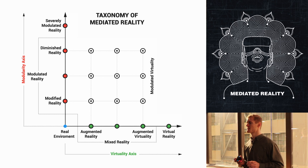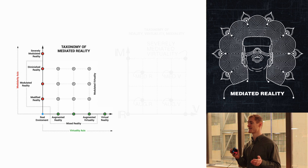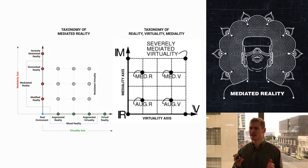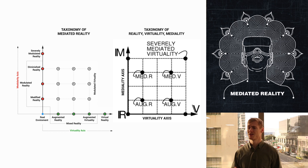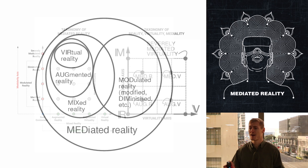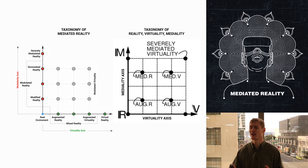I will now discuss the changes which I have made in the taxonomy of mediated reality from Mann's taxonomy of reality, virtual reality, and mediality. Firstly, I've changed Mann's mediality axis to the modulated reality axis. It seems impractical and confusing to use a synonym of mediated for an axis which should describe modularity. It also seems strange that Mann makes the visual implication that modularity should have its own axis in his Venn diagram illustrating mediated reality. After changing the name of this axis and how the graph is arranged, it becomes much clearer as to how the realities within the mediated reality framework sit in relation to one another.